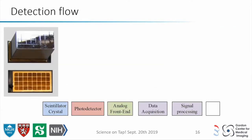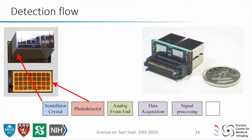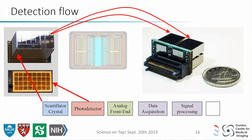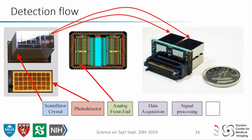Going back to the detector flow: we have the scintillator on top, which is an array of 4×8 crystals, with an array of 4×8 photodetectors. These go in the back of the module, with the front-end electronics. All the data acquisition and signal processing is inside a small chip that sits directly behind the detector.